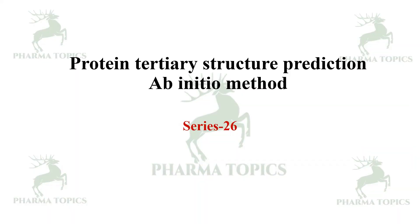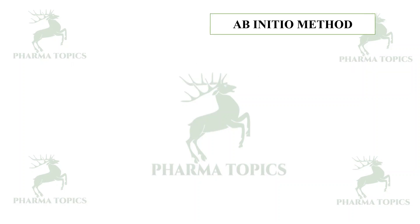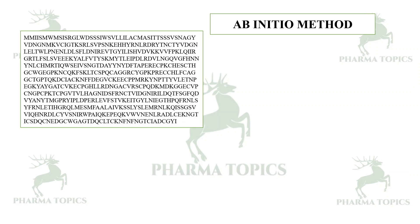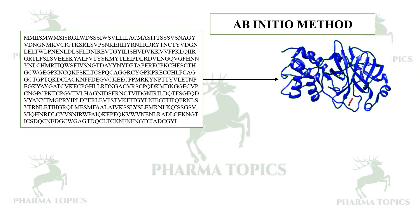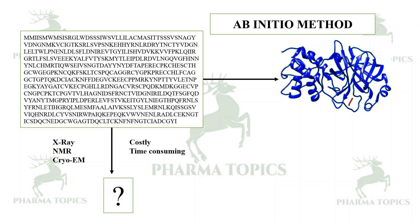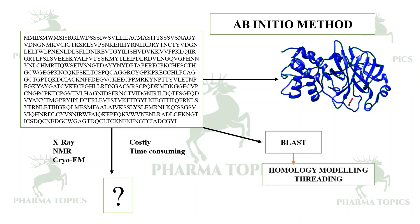Welcome to our Pharma Topics channel. This is the 26th series on protein tertiary structure prediction by the ab initio method. You have a sequence and need to build a model for drug discovery by molecular docking or similar approaches. As we know, X-ray, NMR, and cryo-electron microscopy are time consuming and costly, so we use BLAST followed by homology modeling or threading.